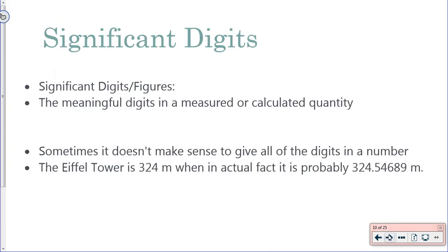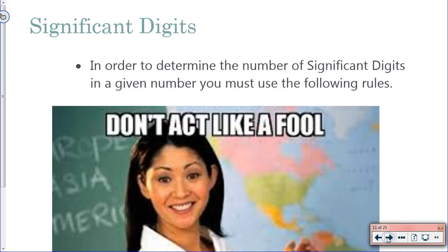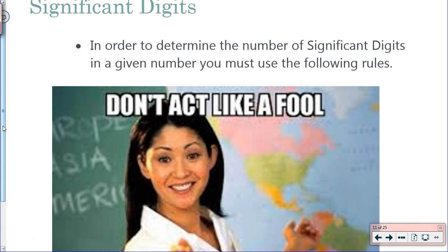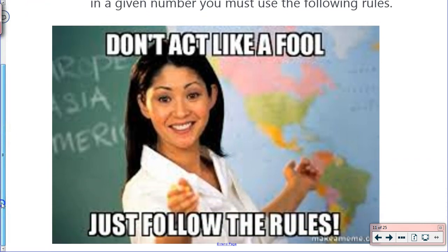Significant digits or significant figures. Lots of debate between scientists as to which one you should be using. Don't worry, digits is right, figures is wrong. These are the actual digits in a measurement, or any kind of calculation, that we actually know. Every time we take a measurement, there's always going to be a level of measurement that we don't actually know for sure. It depends on what we're using. So we're not always going to use all of our digits. The Eiffel Tower example is that we could measure it to 324 meters if we broke out a meter stick. If you were to break out something that could measure a lot more accurately, you might get a number like 324.54689. We don't always need a high level of accuracy.